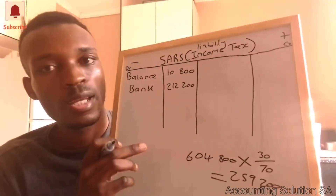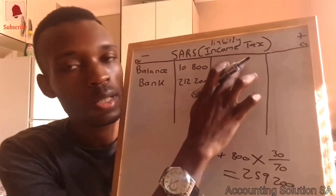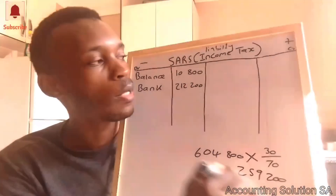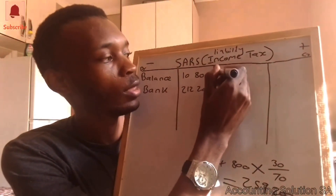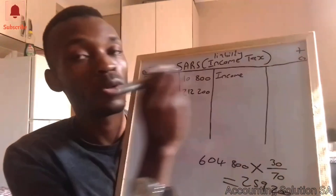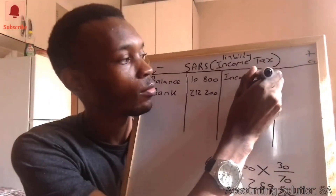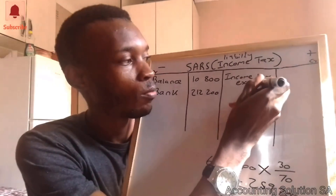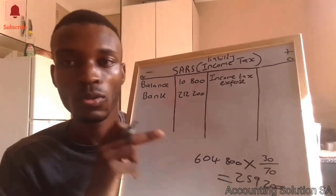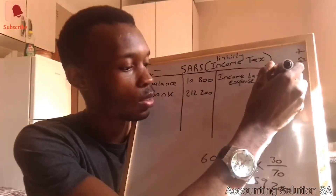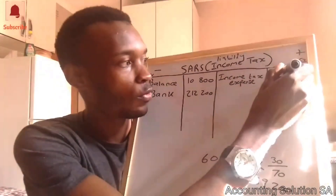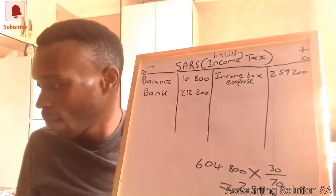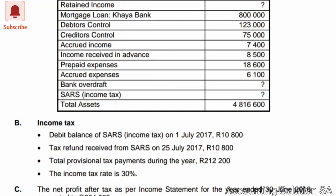The amount of 259,200 is recorded on the credit side of the T-account because it increases our liability. This is the income tax expense recorded on the income statement. Make sure you show this calculation for marks: 604,800 × 30/70 = 259,200.